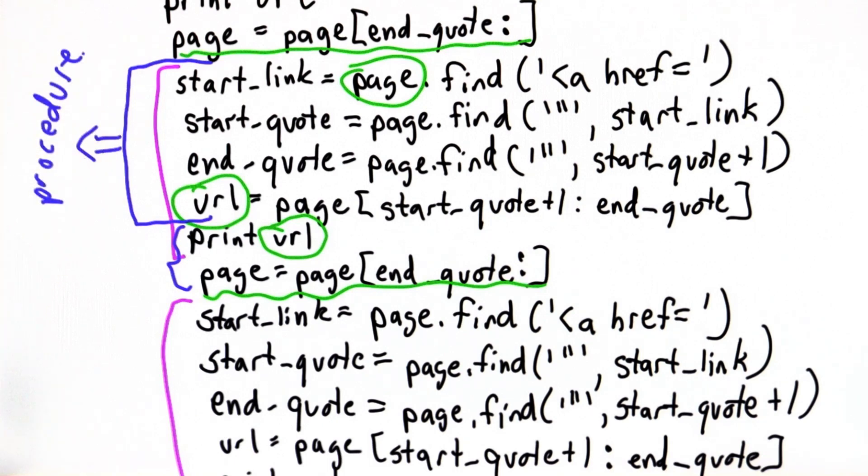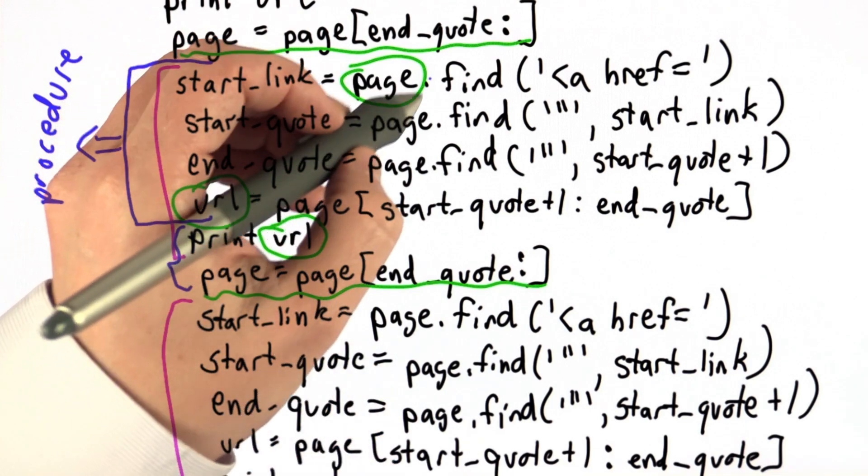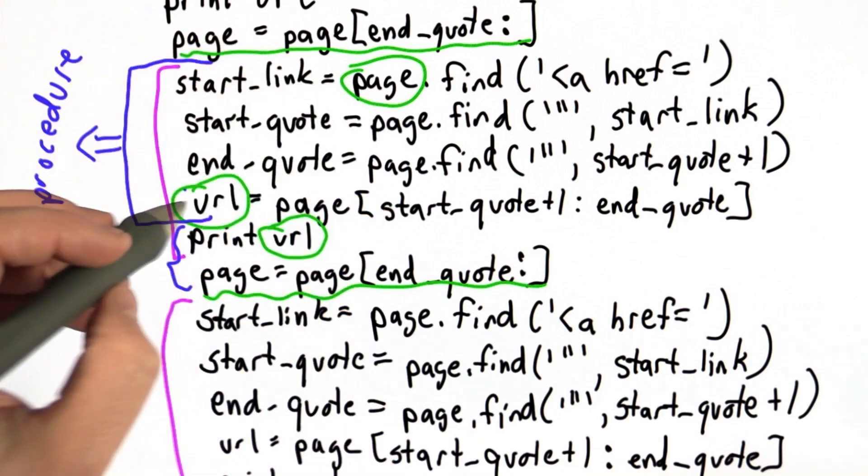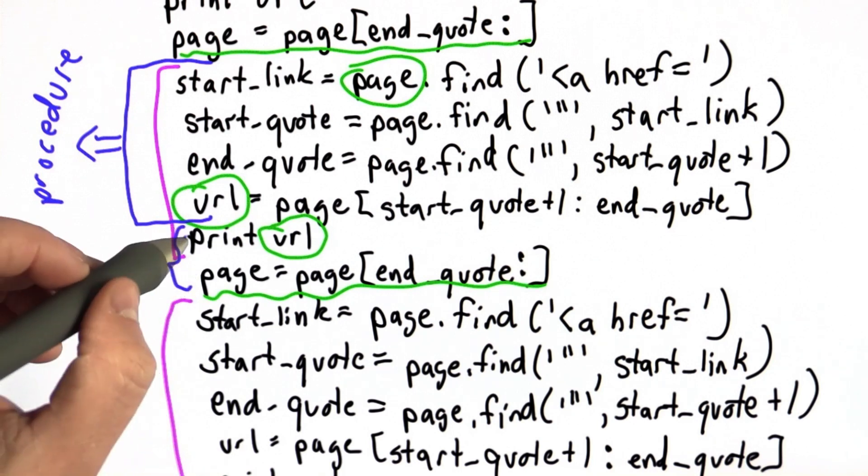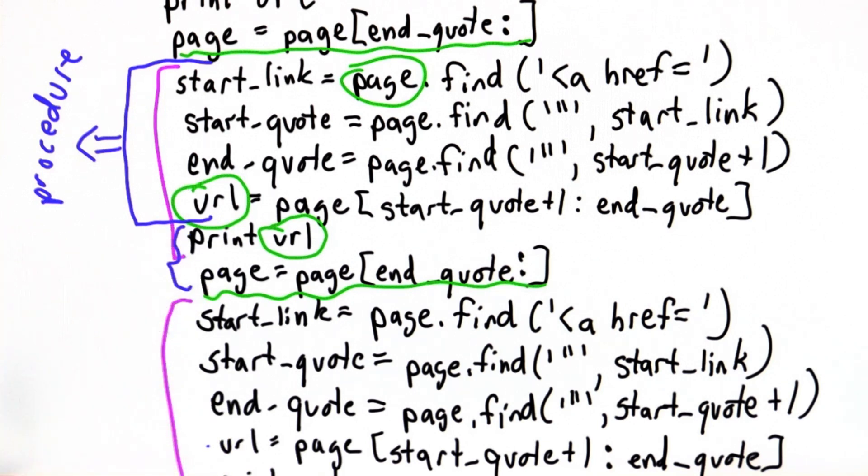Instead of having to do all this work each time, what we want is a procedure that will start from what we have here. We have the page, and from the page we do a bunch of work to get the URL. Then we want to do some stuff with the URL and the page, and then we're going to do it all over again.